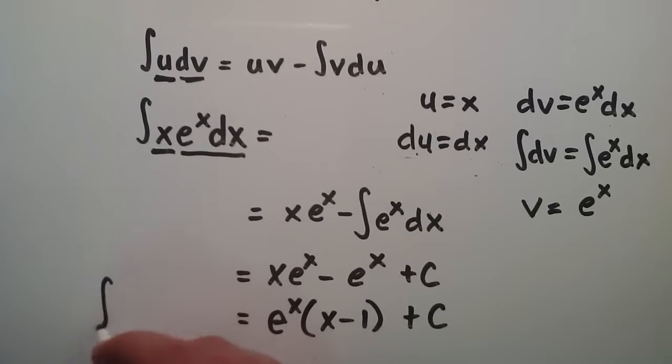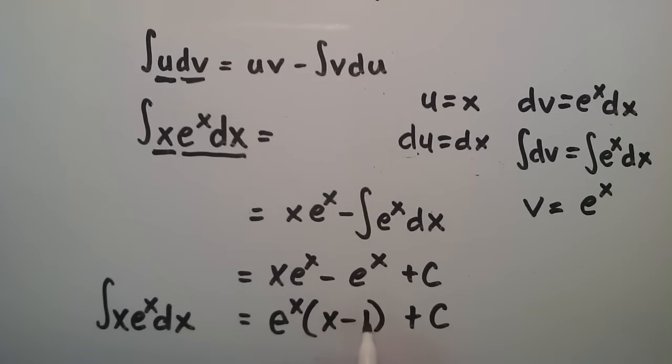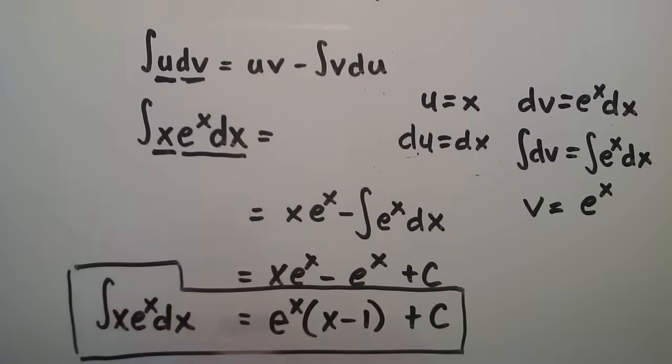So we just solved the integral of x e to the x with respect to x. It turns out that it's equal to e to the x multiplied by the quantity of x minus 1 plus some constant. This is the solution, and we got that by using integration by parts.